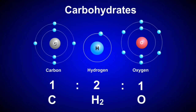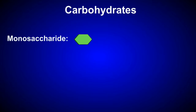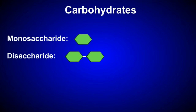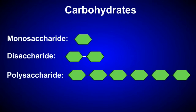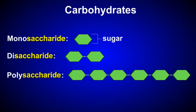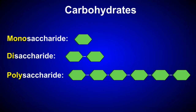Most carbohydrates are characterized as either monosaccharides, disaccharides, or polysaccharides. The term saccharide is just another word for sugar. The prefixes mono, di, and poly refer to the number of sugars in the molecule.